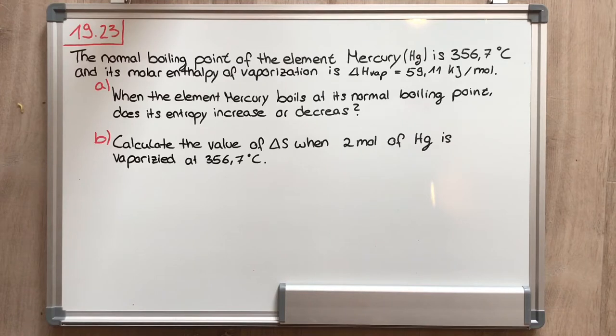The normal boiling point of the element mercury is 356.7 degrees Celsius and its molar enthalpy of vaporization is 59.11 kilojoule per mole. Part A: When the element mercury boils at its normal boiling point, does its entropy increase or decrease? Part B: Calculate the value of delta S when 2 mol of mercury is vaporized at 356.7 degrees Celsius.